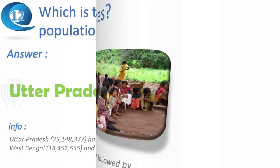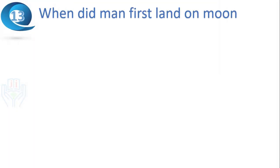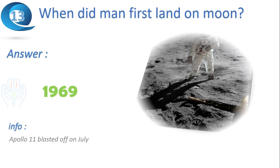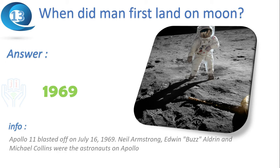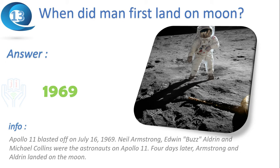Next question: when did man first land on the moon? Answer: 1969. Apollo 11 blasted off on July 16, 1969. Neil Armstrong, Edwin 'Buzz' Aldrin, and Michael Collins were the astronauts on Apollo 11. Four days later, Armstrong and Aldrin landed on the moon.